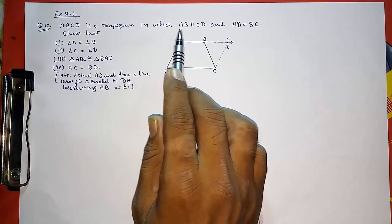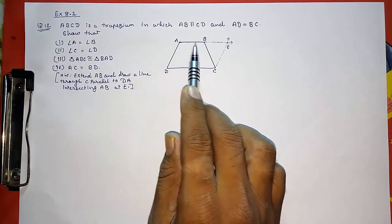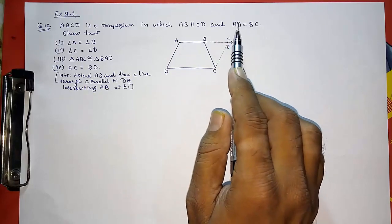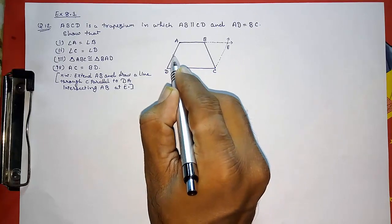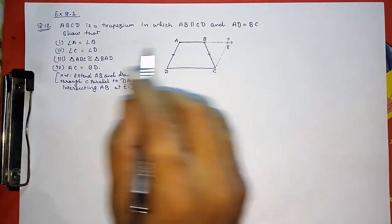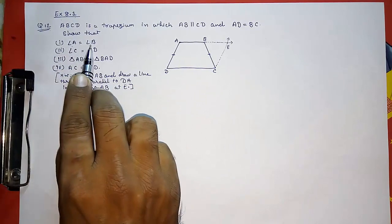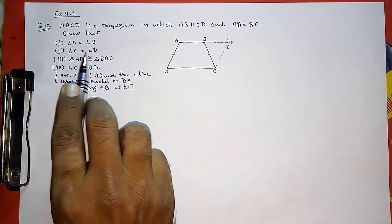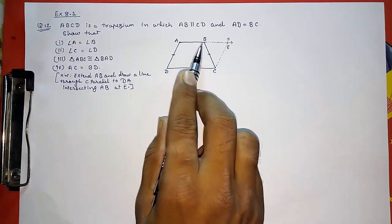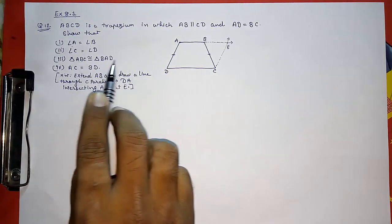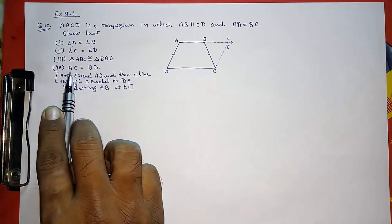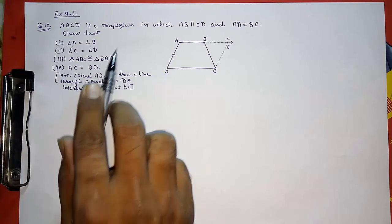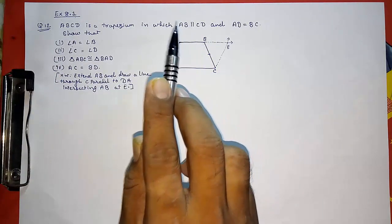ABCD is a trapezium in which AB is parallel to CD and AD is equal to BC. We have to prove: angle A is equal to angle B, angle C is equal to angle D, triangle ABC is congruent to triangle BAD, and AC is equal to BD. Always read the question properly first, then start to solve.